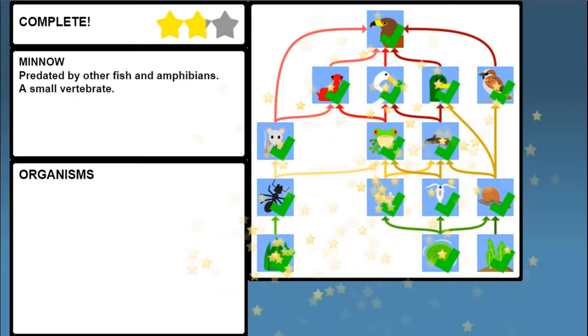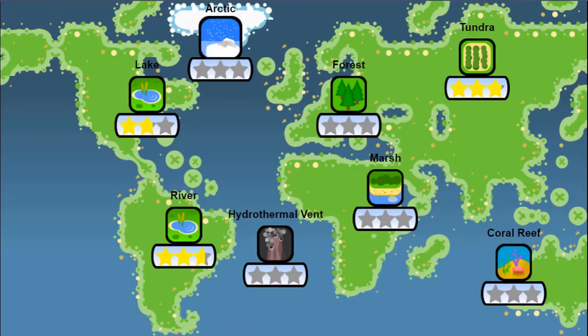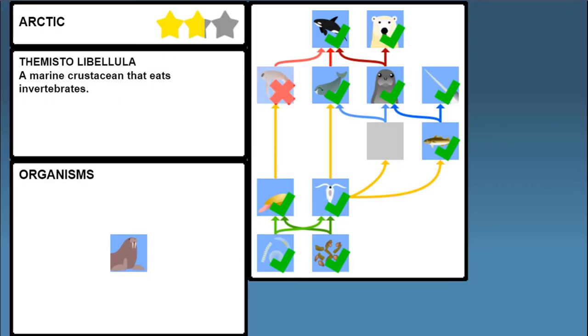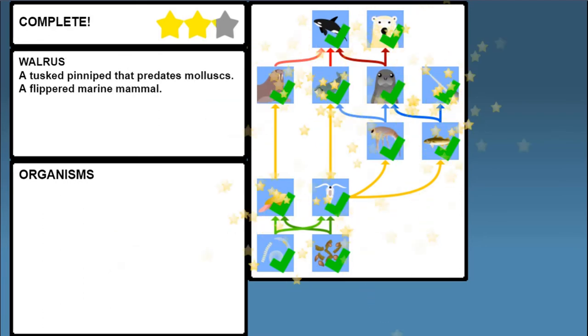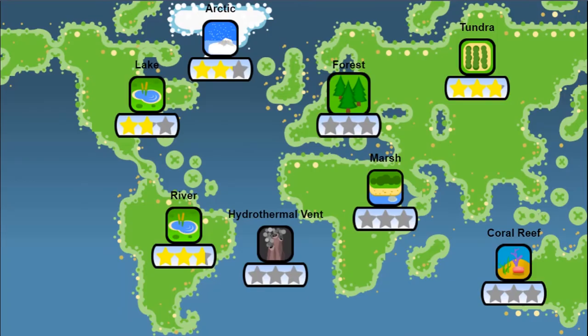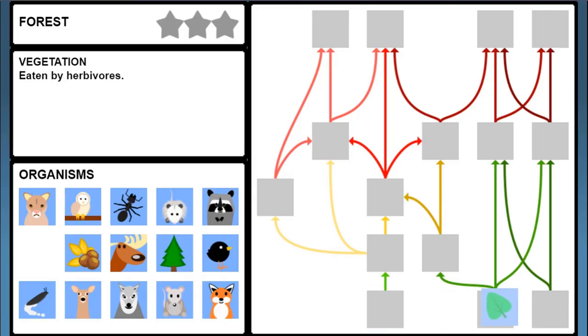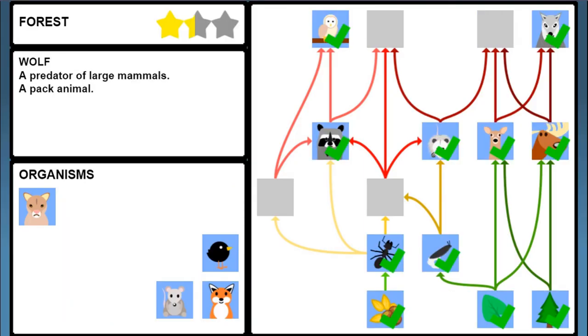You must use the clues in the organism's description to help you choose the correct icons to progress further. You must complete all eight of the ecosystems in order to complete the game. You will learn more about food webs in this game as you progress to higher levels.